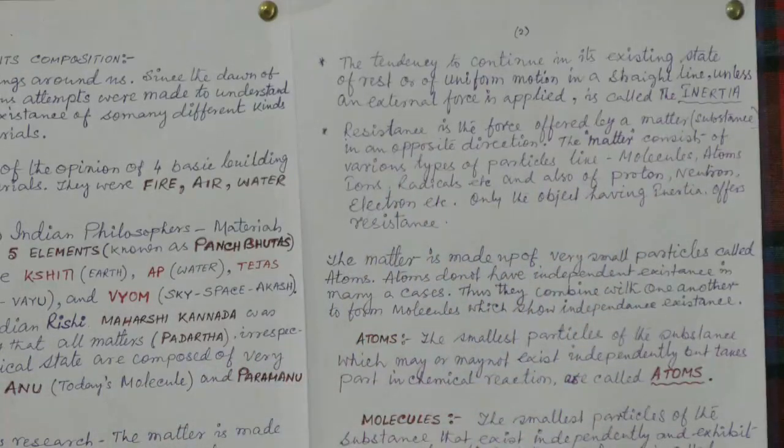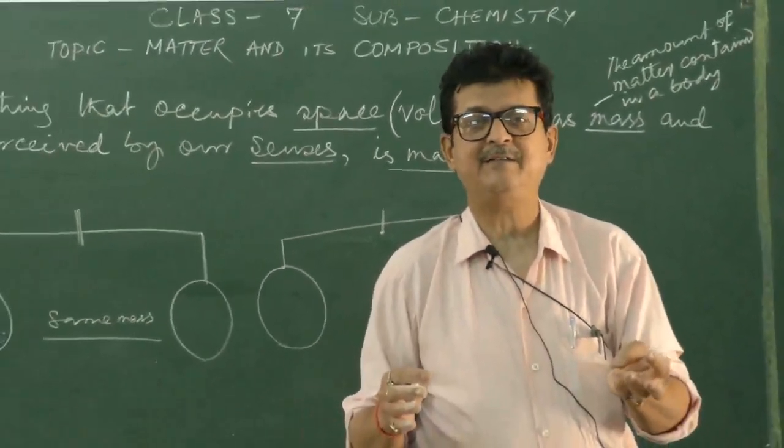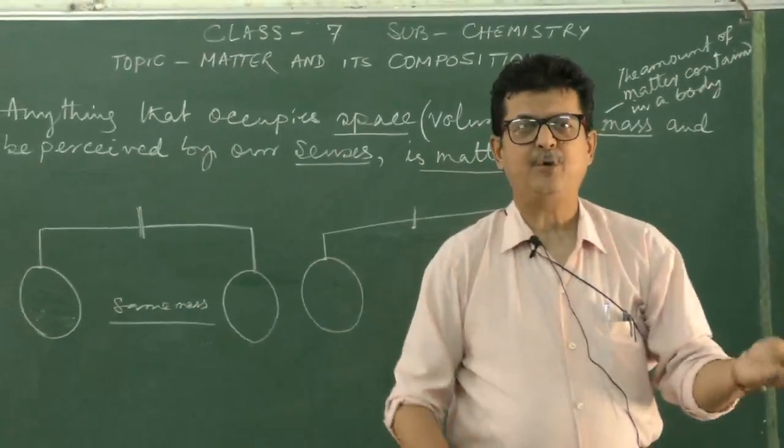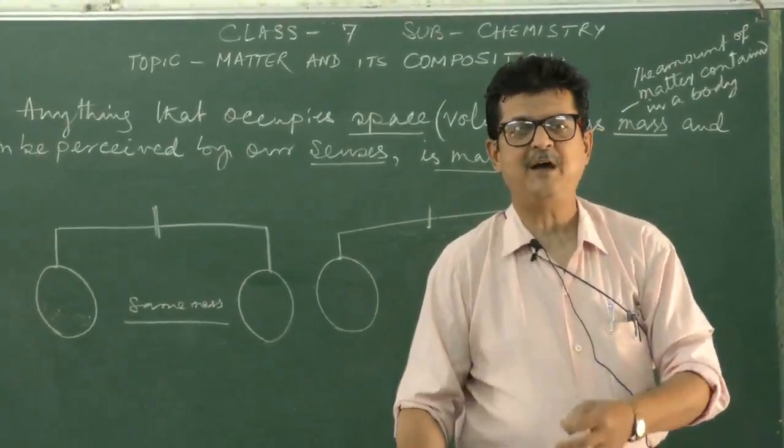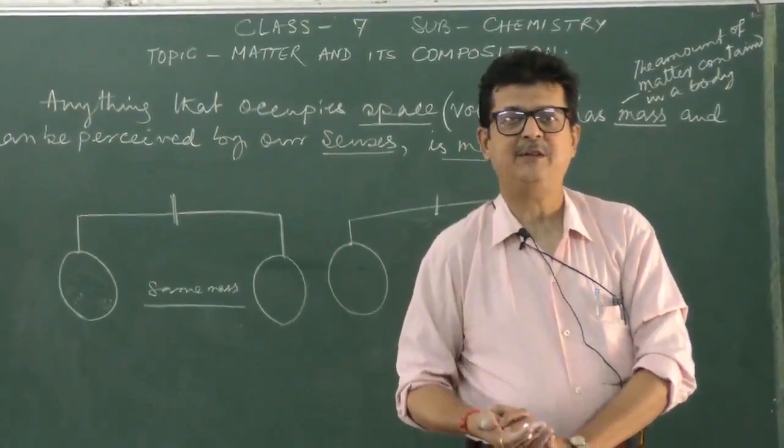And at the same time, this happens to be only when the matter is made up of particles. And those particles may be molecules, atoms, ions, radicals, etc. Or in turn, protons, neutrons, electrons, means the nucleons and the electrons in the matter, in the molecule, in the atom.